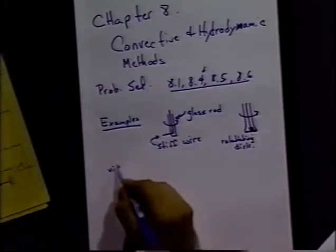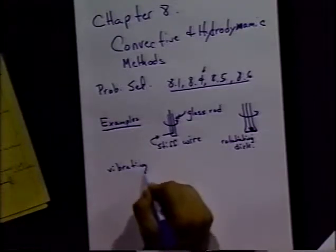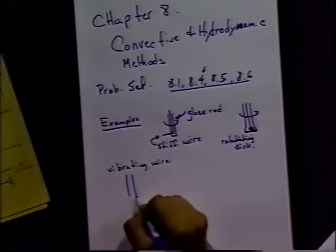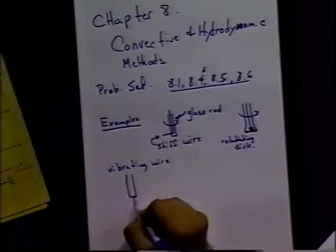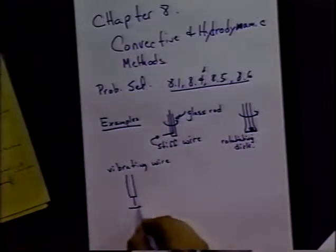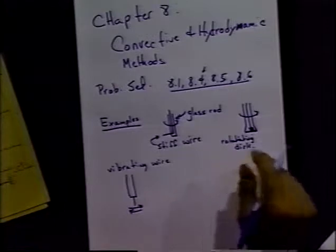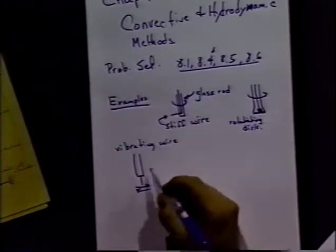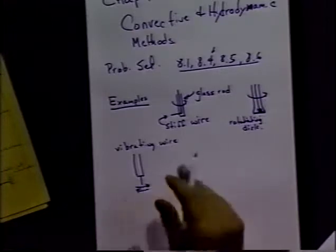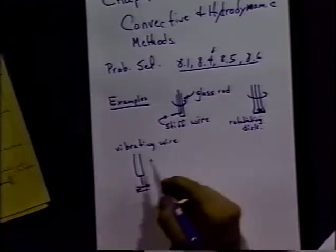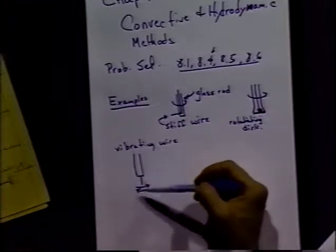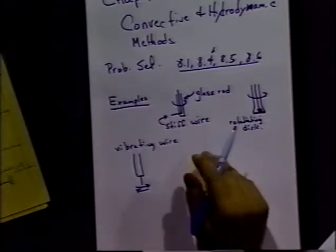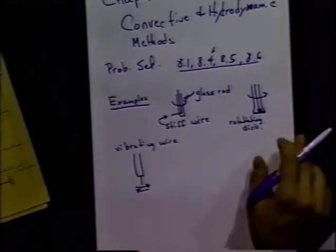Vibrating wires are also used. Not so much anymore. People have really not used a lot of these kind of easy to make electrodes because it turns out you can use other sorts of things that are commercially available that give you much more reproducible results. The vibrating wire would be one example where you would just say, take a wire sticking out vertically from a system and then vibrate it back and forth with, say, a cone of a speaker or something like that would be a typical way.